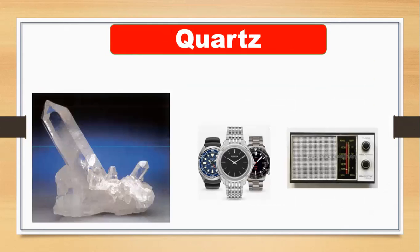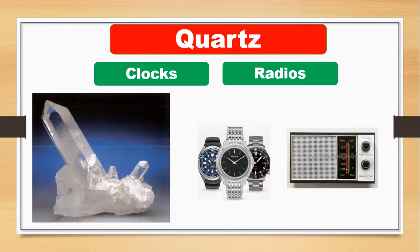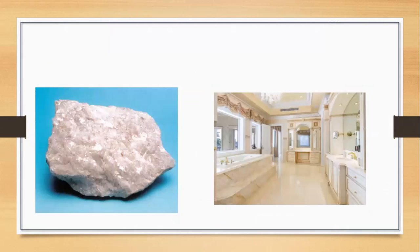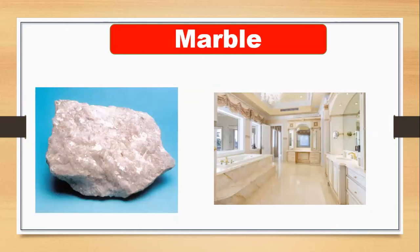Quartz — we use quartz in our clocks and radios. So we use quartz in clocks and in radios. It is a kind of rock.